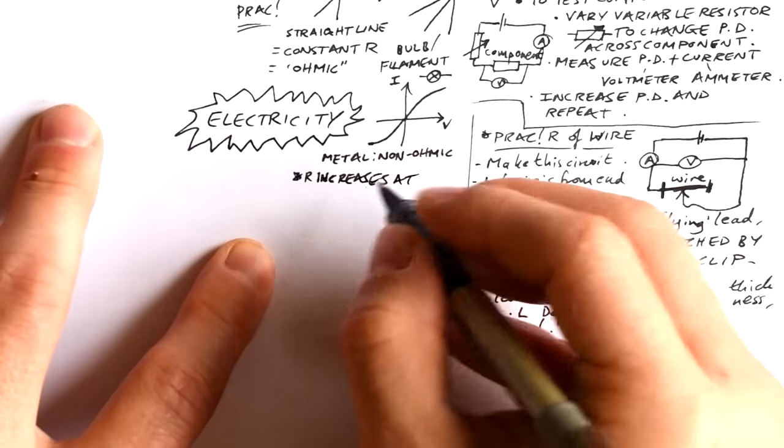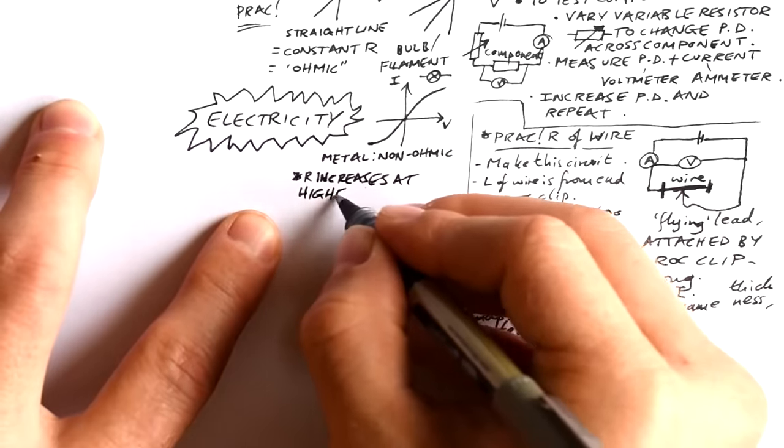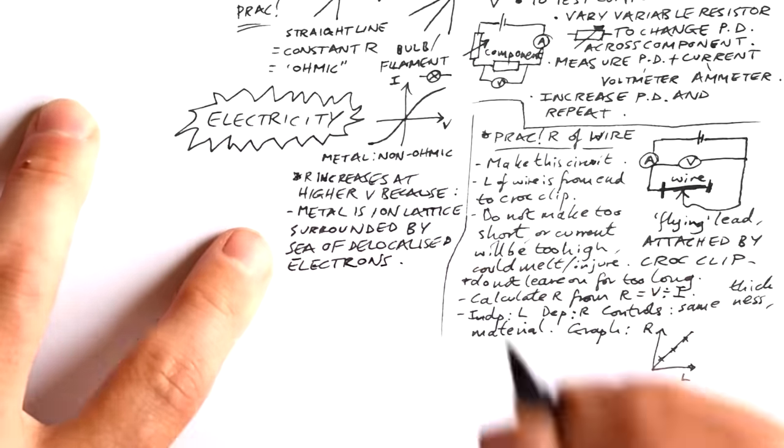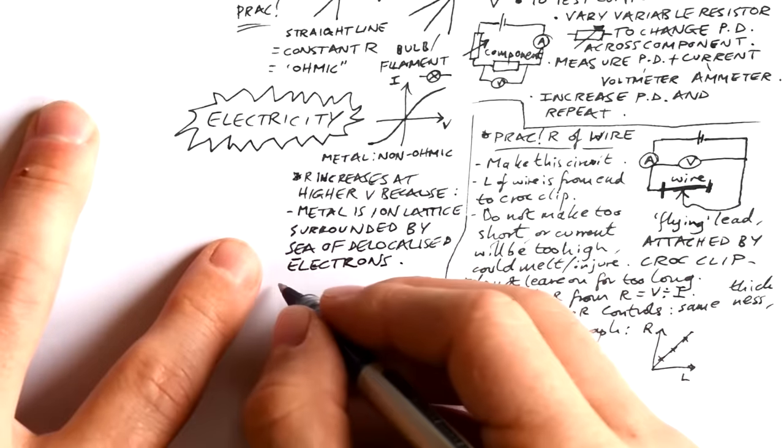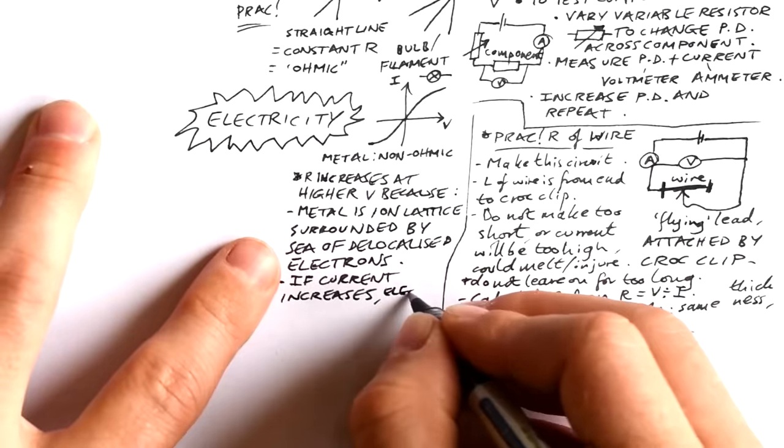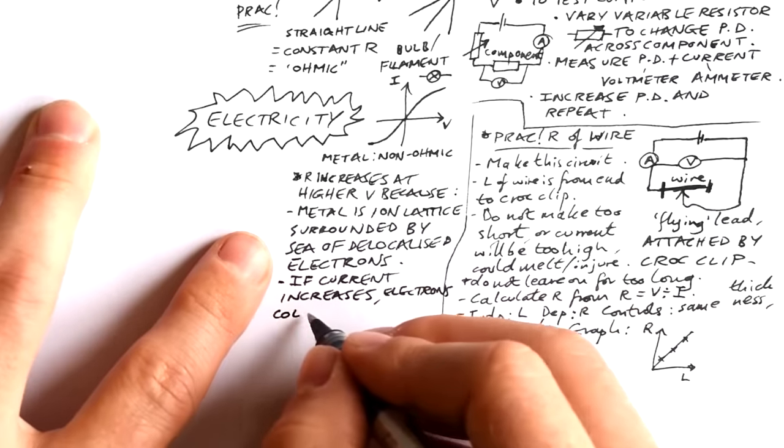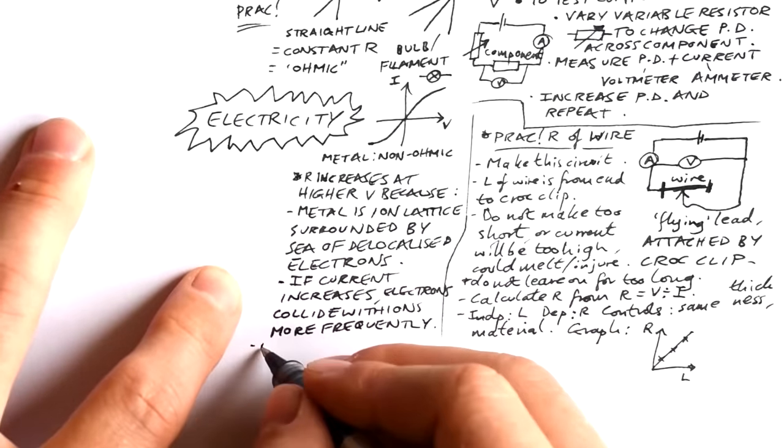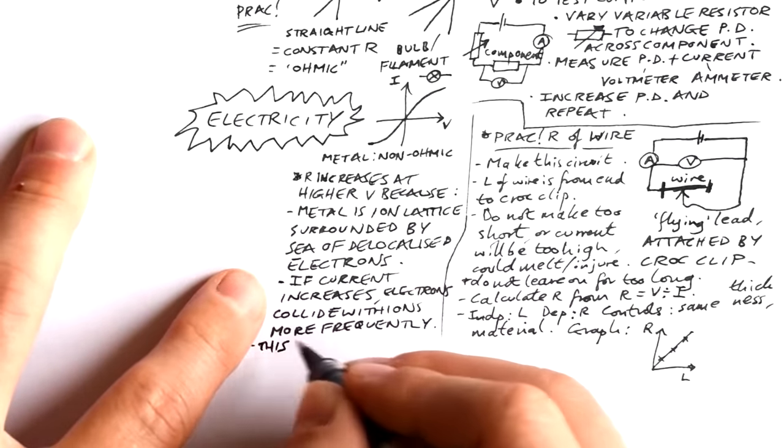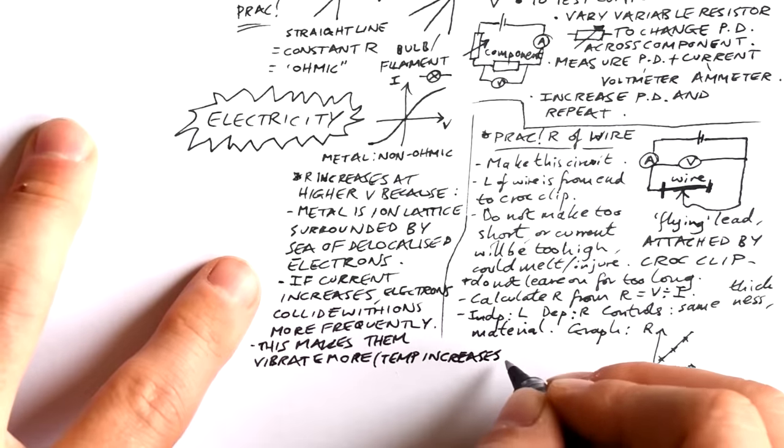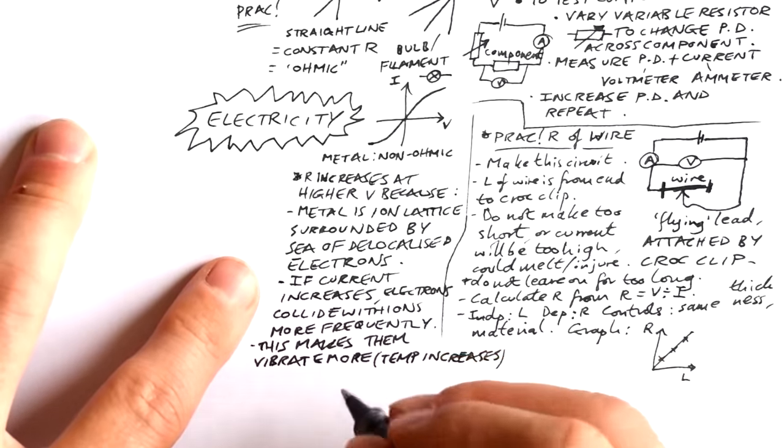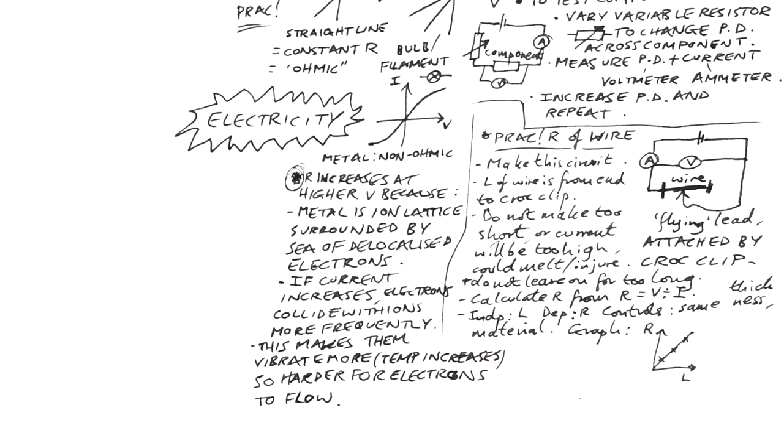So here's why the resistance increases for a filament bulb. You should know from chemistry that metal is a lattice of ions surrounded by a sea of delocalized electrons. That just means they're free to move. So when you increase the PD, the current increases, but this makes the electrons collide with the ions in the metal more frequently. This then makes the ions vibrate more, that means the temperature increases, so that makes it even harder for the electrons to flow. So the resistance increases.